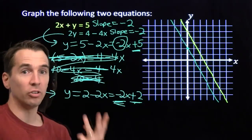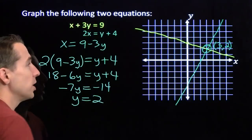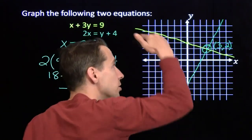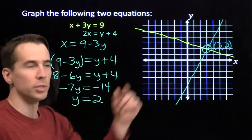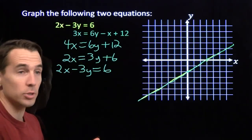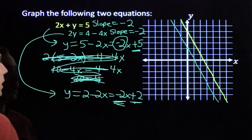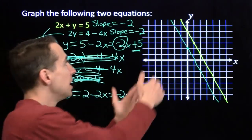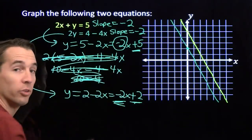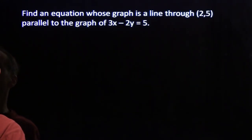So now we have graphical explanations for our three possibilities for systems of equations. It's possible to have exactly one solution — two lines intersecting at one point. It's also possible to have infinitely many solutions — if the equations are the same, their graphs are identical. And it's also possible to have no solutions — the graphs are parallel lines, which happens when the slopes are the same but the lines are not the same. Now let's use that last fact in one more problem.